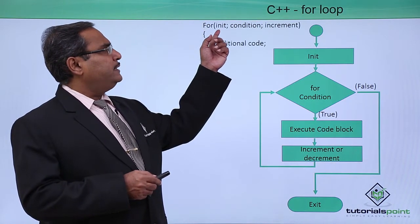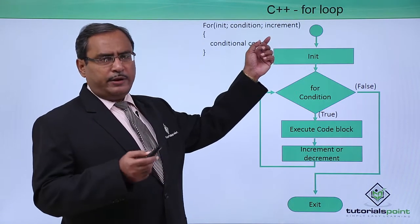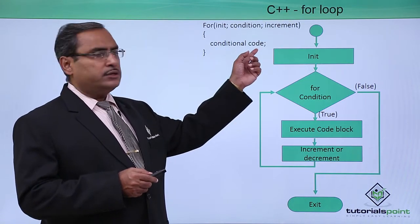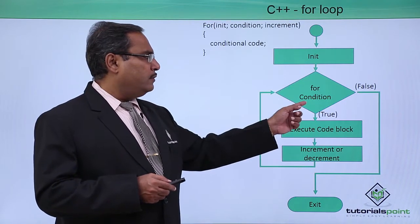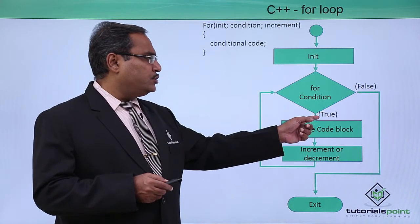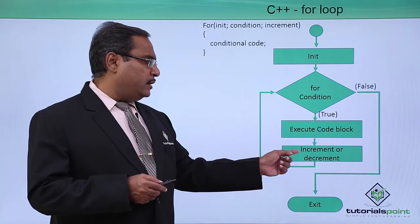For the for loop we have this initialization, we have the condition, and then we have the increment or decrement. This is initialization, then the condition. If the condition is true, then execute the code block, then go for increment or decrement.